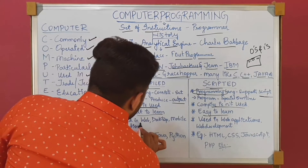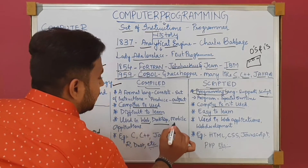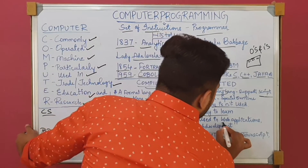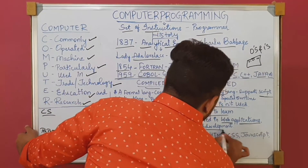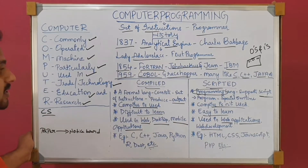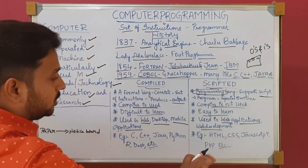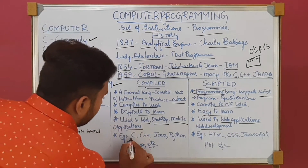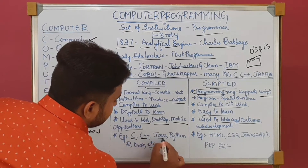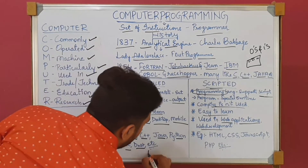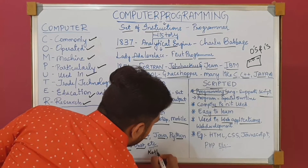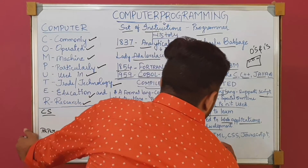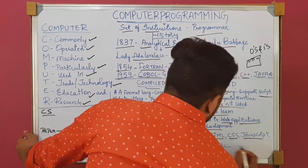Compiled programming is used in web applications, desktop applications, and mobile applications. But in scripted programming, we only use it in web applications and web development — it is not used in desktop or mobile applications. Examples of compiled programming languages are C, C++, Java, Python, R, Dart, Kotlin, etc. Examples of scripted programming languages are HTML, CSS, JavaScript, PHP, etc.